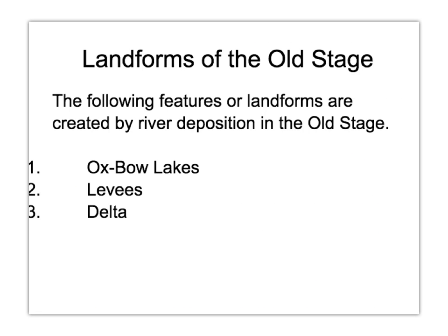The old stage is the very last stage of the river's journey, and it's where we get most of the deposition. Because of deposition, many features and landforms are created, such as oxbow lakes, levees, and deltas. I would recommend you learn either oxbow lake or the delta, as there's more information about them than levees.